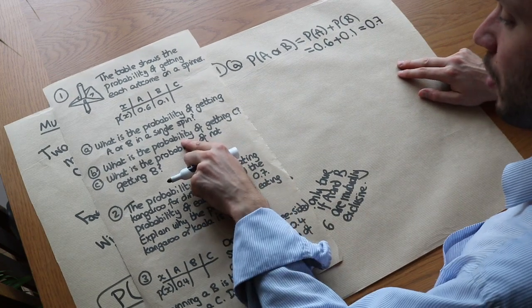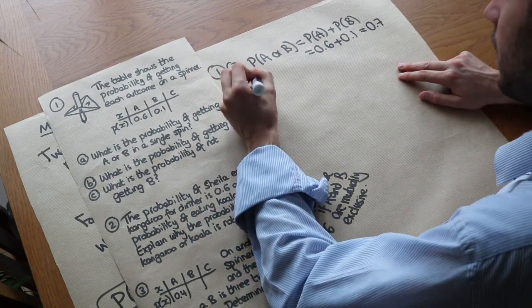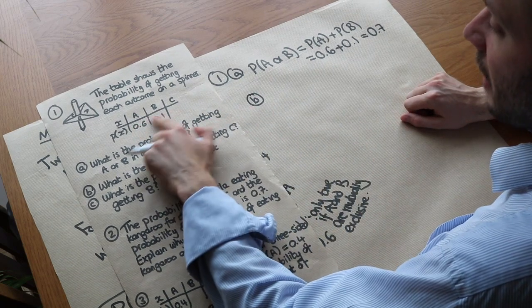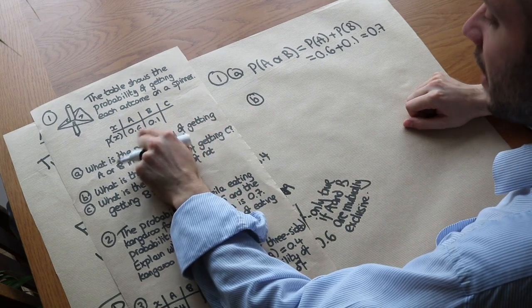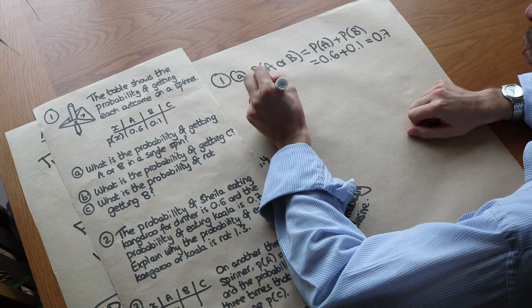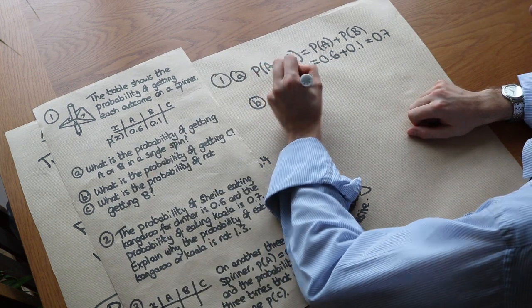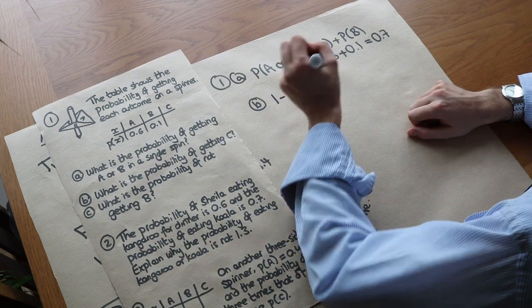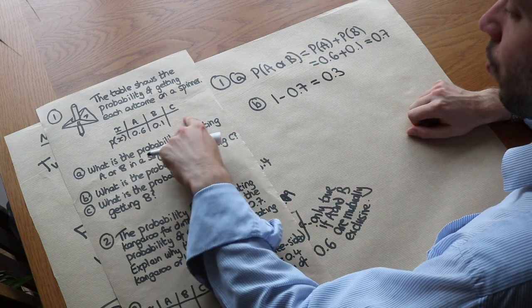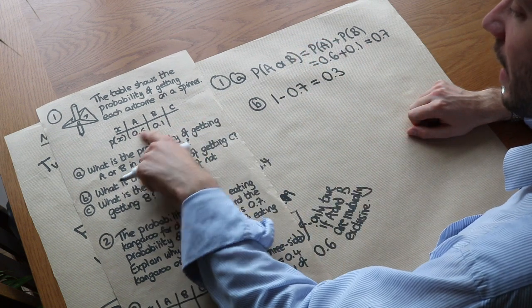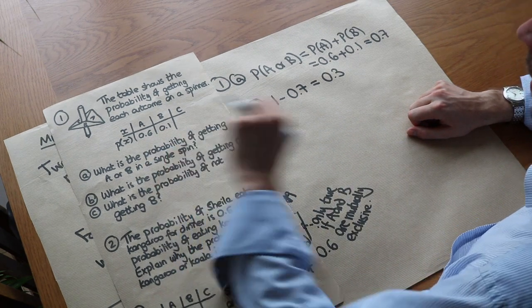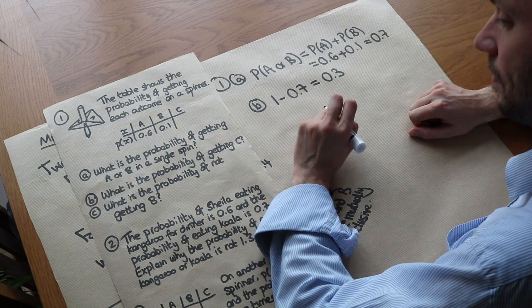Part B: what is the probability of getting C? The total probability of mutually exclusive outcomes must add up to 1. Since A and B together give 0.7, we do 1 minus 0.7 to get 0.3. We can verify: 0.6 plus 0.1 plus 0.3 equals 1, so all probabilities add up to 1.